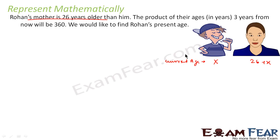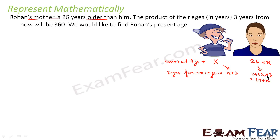The question says the product of their ages 3 years from now. After 3 years, Rohan's age will be x plus 3 and his mother's age will be 26 plus x plus 3, which is 29 plus x. The product of their ages after 3 years will be 360, so x plus 3 into 29 plus x equals 360.